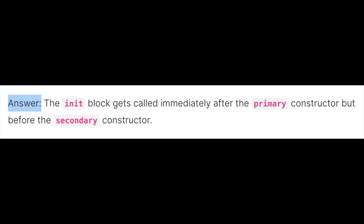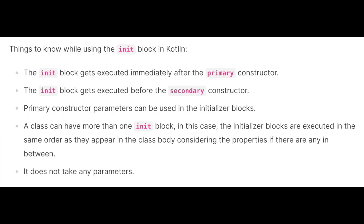There are a couple of things we should know while using the init block in Kotlin. First, the init block gets executed immediately after the primary constructor. Second, the init block gets executed before the secondary constructor. Third, primary constructor parameters can be used in the initializer blocks. Fourth, a class can have more than one init block — in that case, the initializer blocks are executed in the same order as they appear in the class body, considering properties if there are any in between. Also, the init block does not take any parameter.